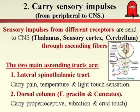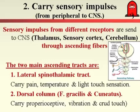Generally speaking, we have two main ascending tracts: the lateral spinothalamic tract — from its name, starting in the spinal cord and ending in the thalamus — and the dorsal column, which ends at the nuclei fasciculus gracilis and fasciculus cuneatus, present in the medulla oblongata. The lateral spinothalamic tract is specific for carrying certain sensations like pain, temperature, and light touch. The dorsal column is responsible for proprioception, vibration, and crude touch. Accordingly, there is a specific pathway for each type of sensation.